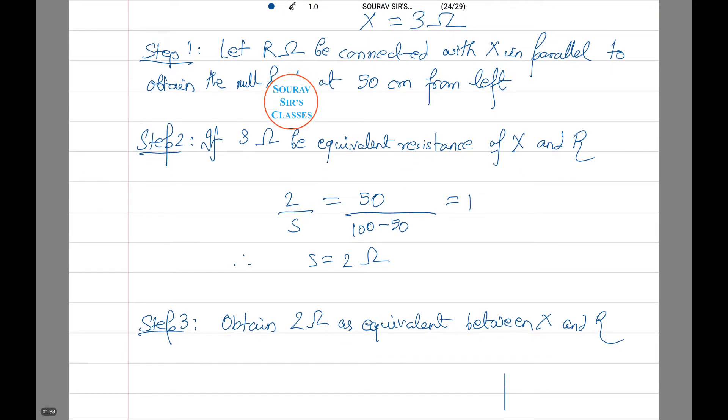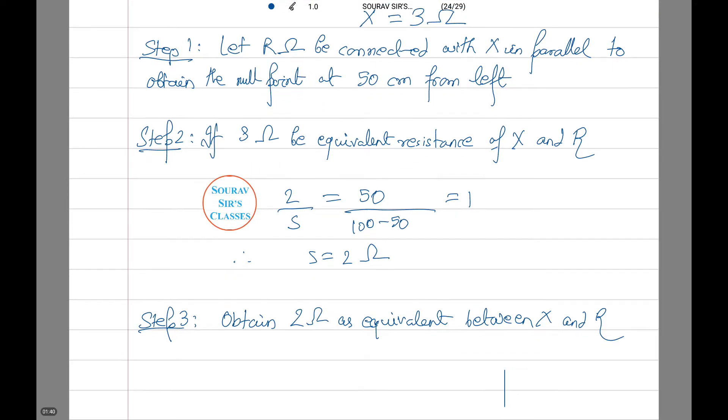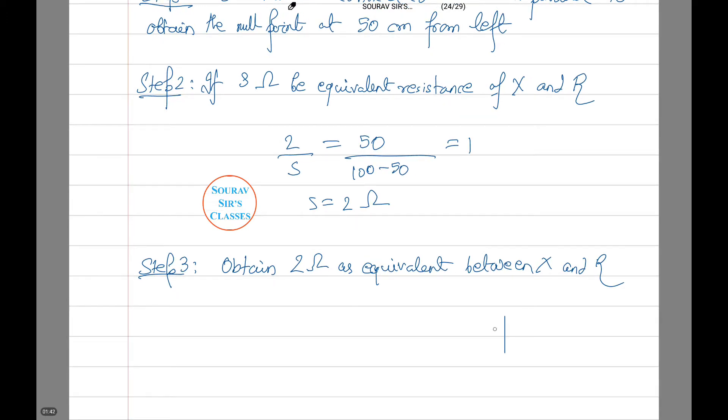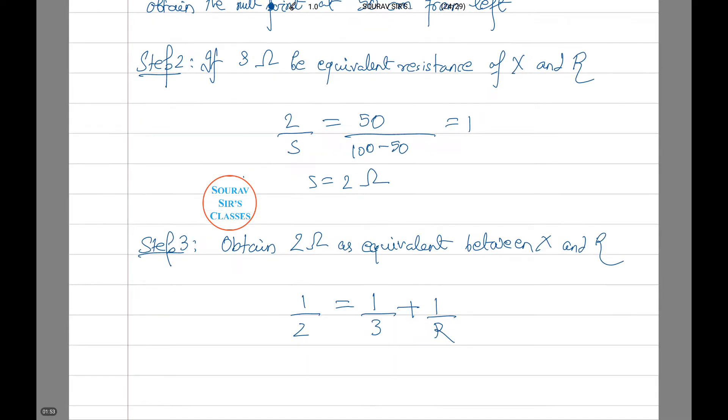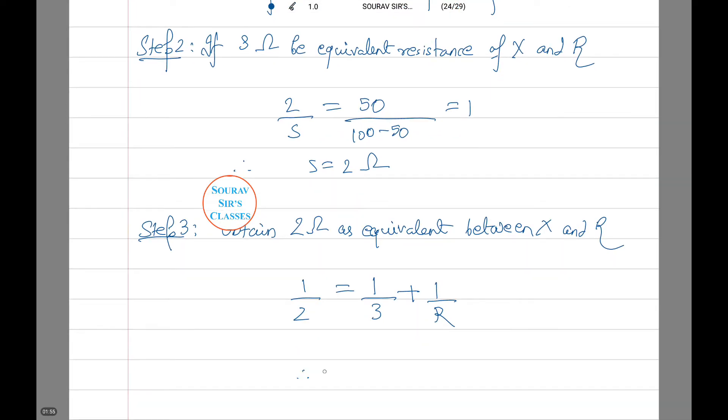Now the third step is to obtain 2 ohms as equivalent between X and R. That is, 1 by 2 equals to 1 by 3 plus 1 by R. Therefore R equals to 6 ohms. Therefore 6 ohms resistance is to be connected in parallel to X. Moving on to the next question.